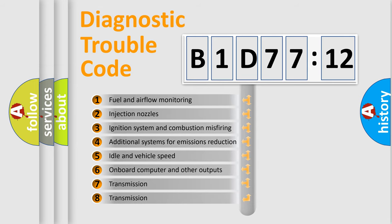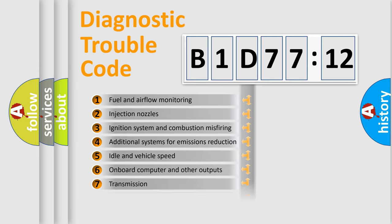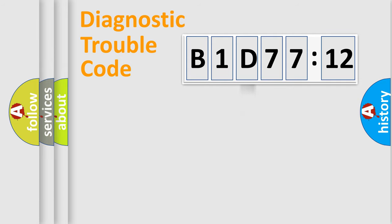The third character specifies a subset of errors. The distribution shown is valid only for the standardized DTC code. Only the last two characters define the specific fault of the group.